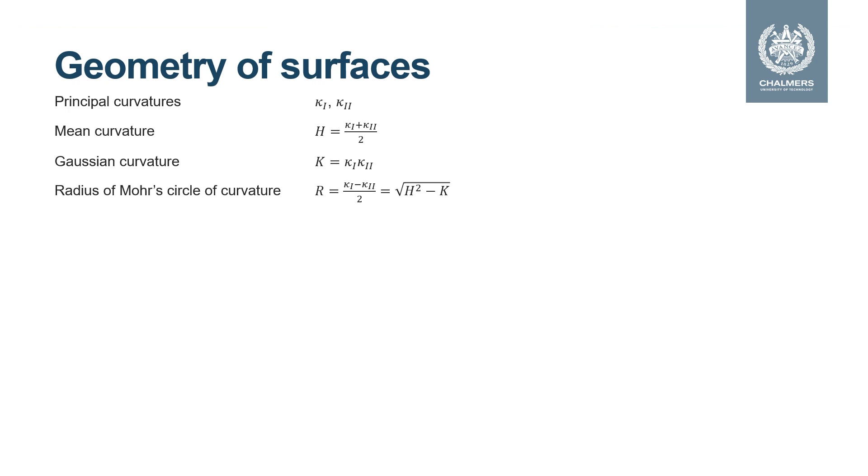Any non-flat surface has curvature and we may quantify this in several ways. The principal curvatures are the maximum and minimum values of the normal curvature of the surface. From these values we get the mean curvature, the Gaussian curvature, and the radius of Mohr's circle of curvature.